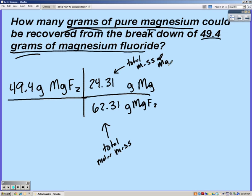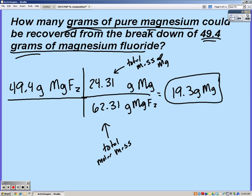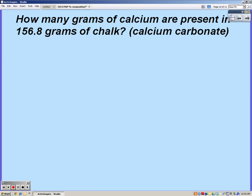So in this case we only had one magnesium, which was 24.31 grams. So it's set up exactly like a percent problem: top is what you're looking for, bottom is total mass, but instead of multiply by 100, we multiply by 49.4, giving us 19.3 grams of magnesium, and we had three sig figs because that's how many we started with.